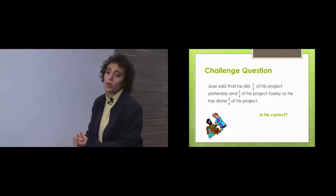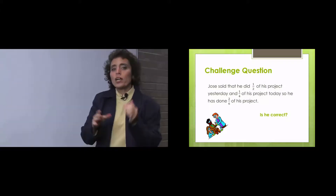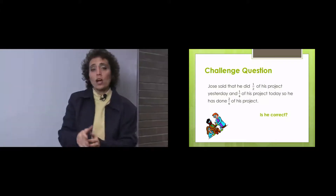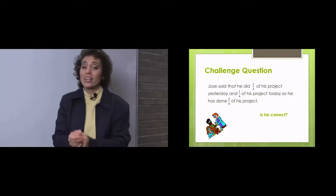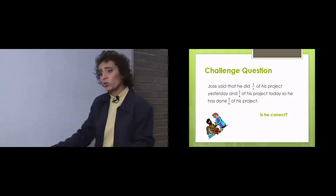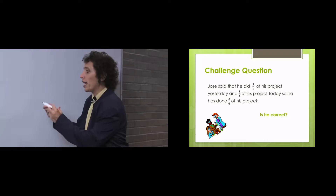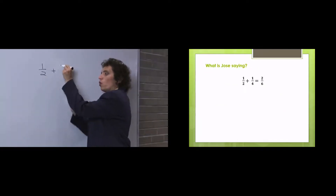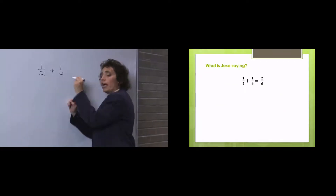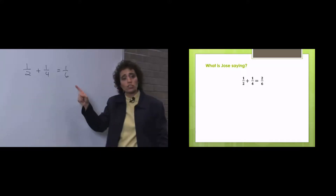Alright, let's take a look at a new set of questions. Jose said he did one half of his project yesterday, and one fourth of his project today. So he has done two sixths of his project. This is what he said: he said he did one half plus one fourth, and he says that he did two sixths of his project. You see what he's doing, don't you?